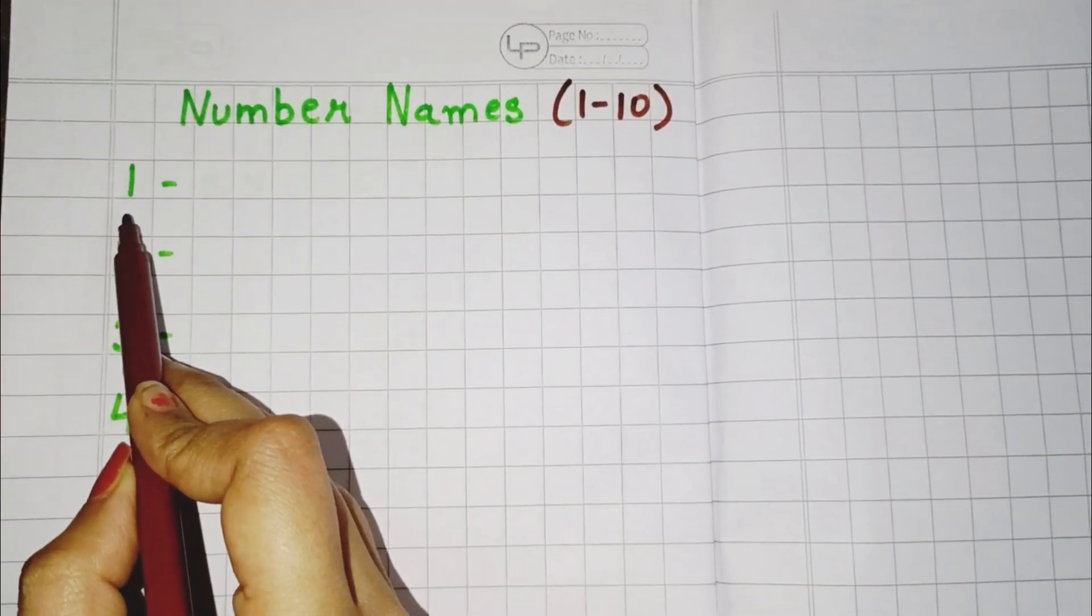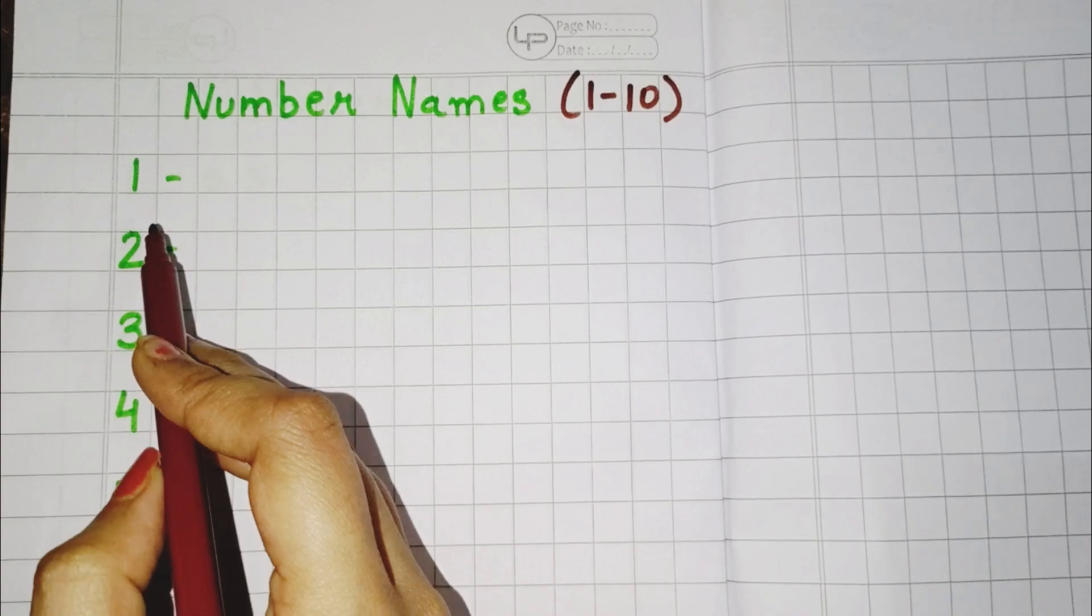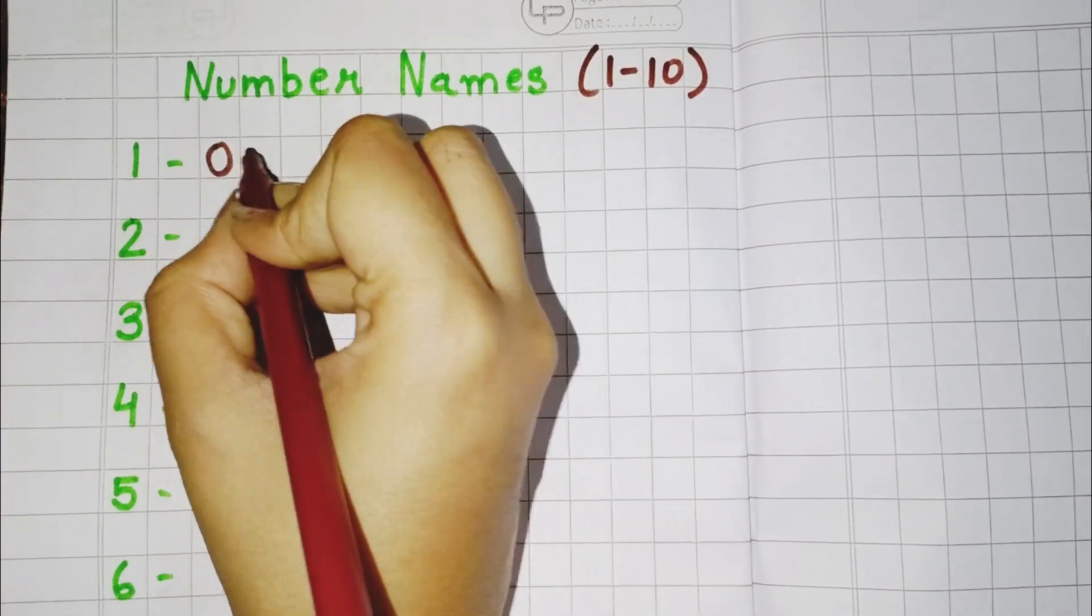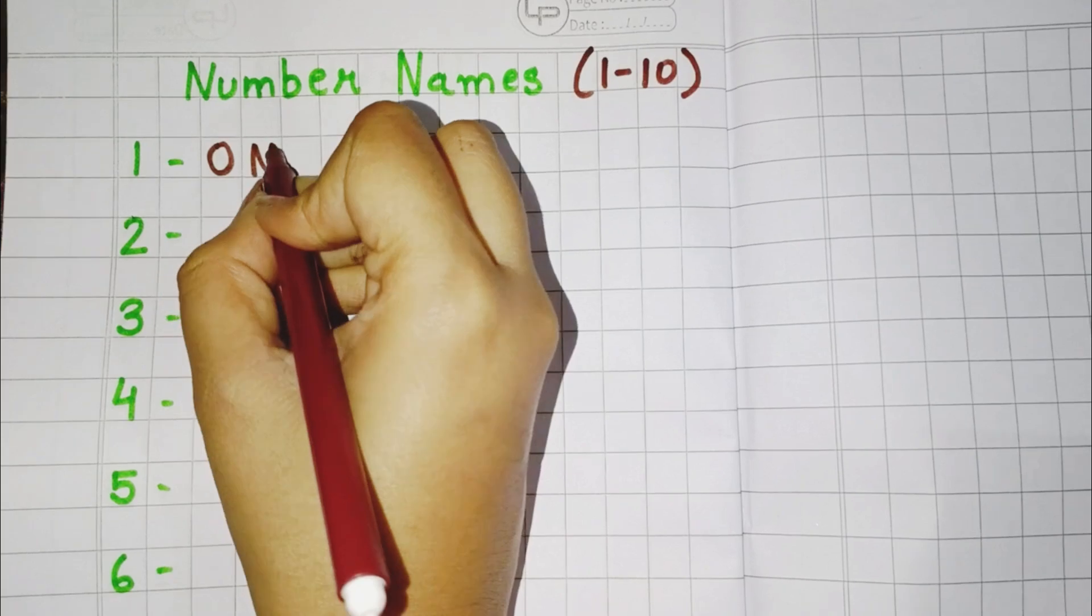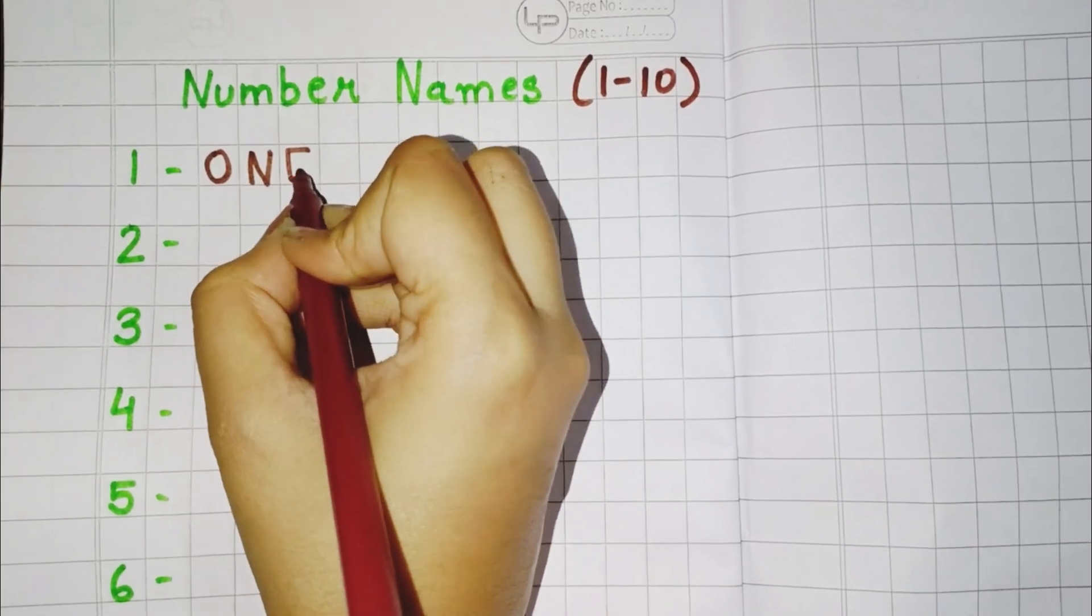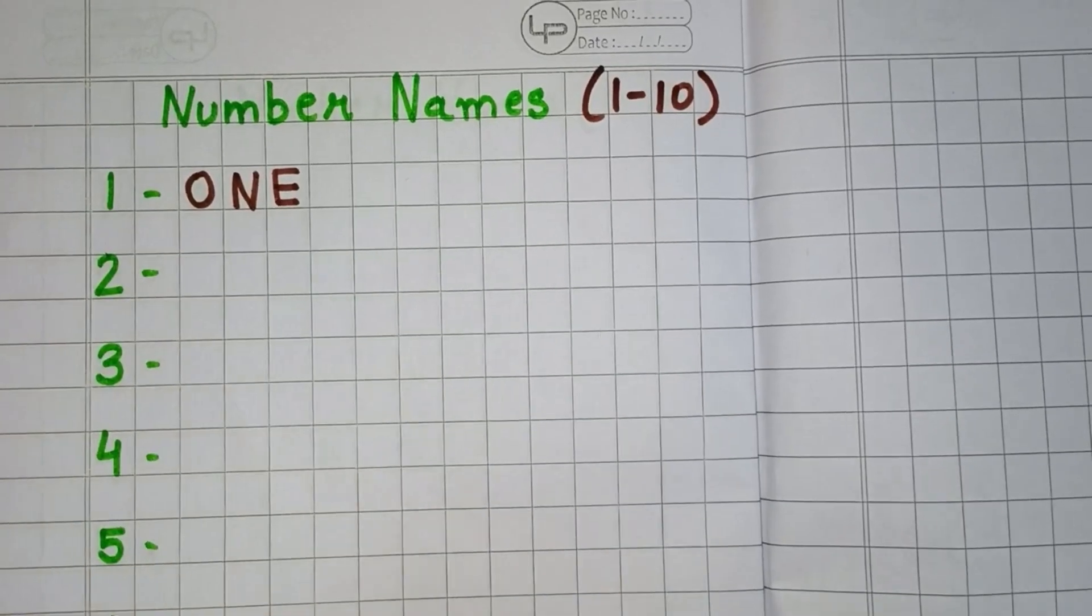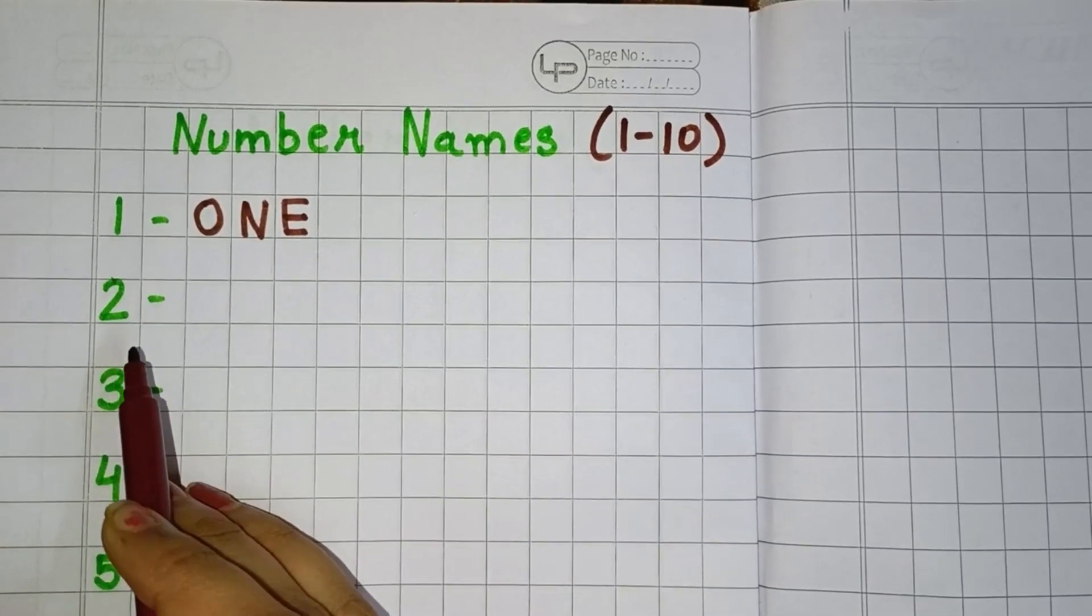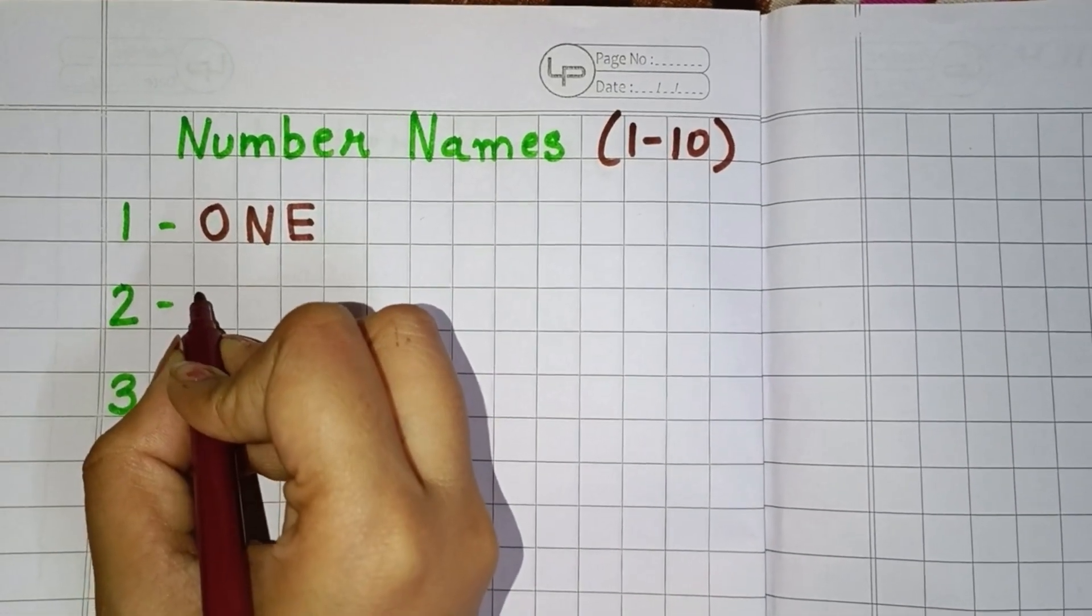What is this children? This is 1. So you have the next number? 2. So you have to write this in words. So how you will write?